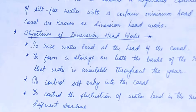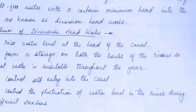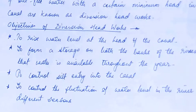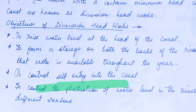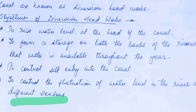What is the objective of providing diversion head works? First, to raise the water level at the head of the canal. Then, to form a storage on both the banks of the rivers so that water is available throughout the year. Third, to control the entry of silt into the canal, and also to control the fluctuation of water level in the river during different seasons.